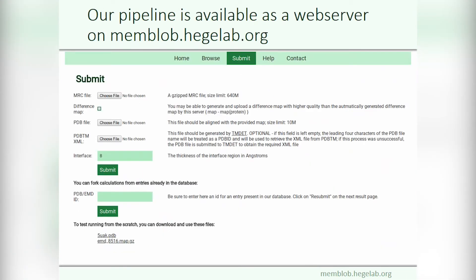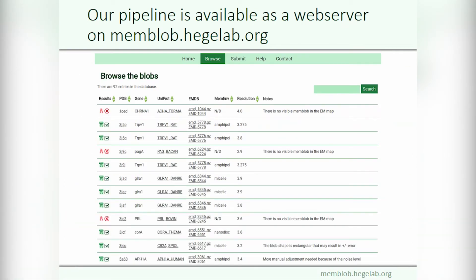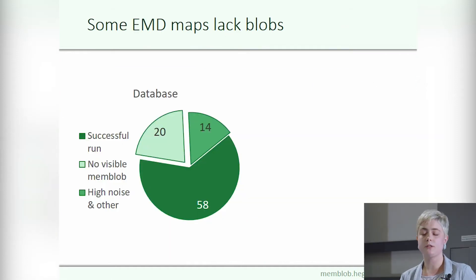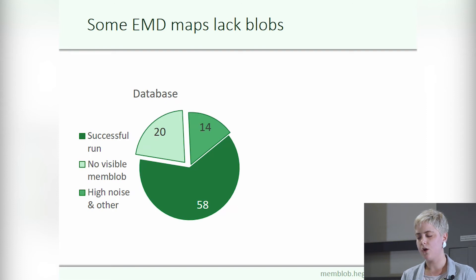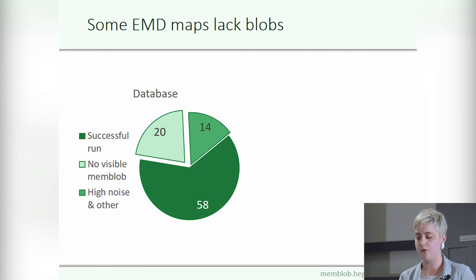We built a web server from this pipeline where you can submit your protein's EMD map and all-atom structure to get its membrane blob and transmembrane regions. We have already run it for 92 transmembrane protein structures determined by cryo-EM with a resolution of 4 angstroms or better. Approximately 30% of the maps don't exhibit well-defined densities for the membrane environment — these structures have either been solved in the absence of a well-formed lipid environment, or this lipid environment was masked out before uploading to the database. In some cases, the EMD maps have a very low signal-to-noise ratio which prevents detection of the membrane boundaries.